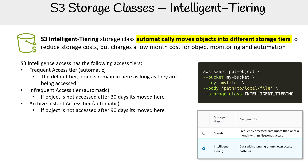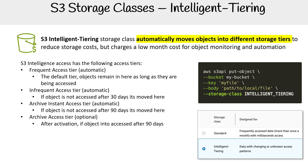There are two other optional tiers. We have the archive access tier, which is S3 Glacier Flexible. When you turn this on, instead of going to instant retrieval after 90 days, it's going to go here instead. You'll get greater savings, and there are more options to configure in terms of retention. After 90 days, it'll go here and you'll save more money.